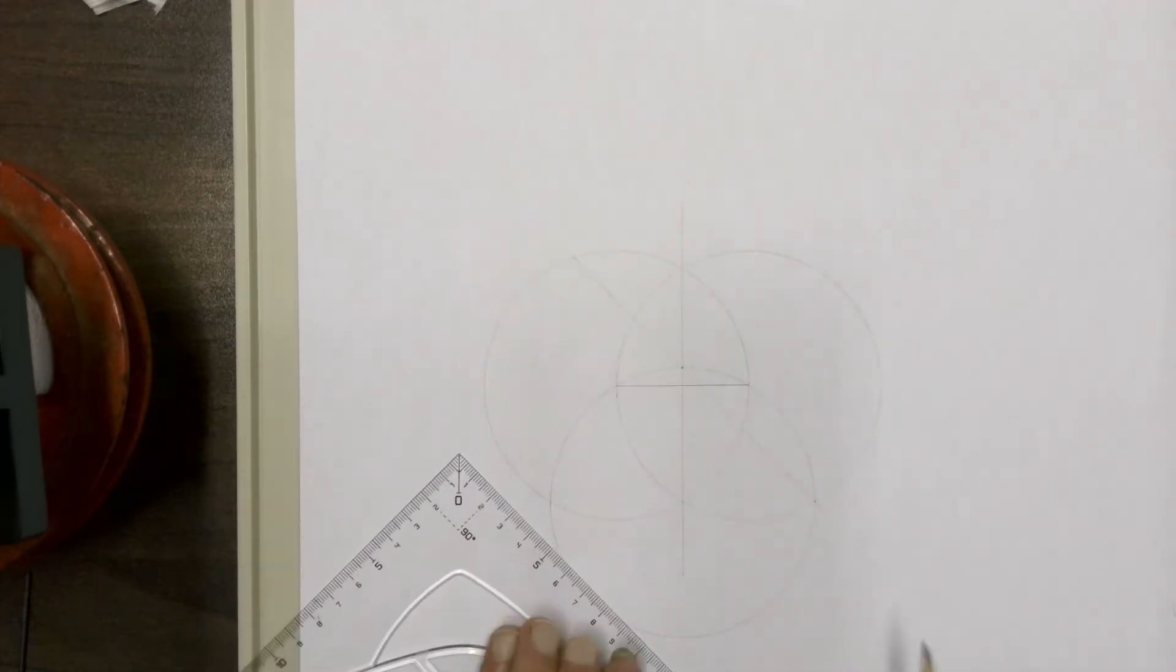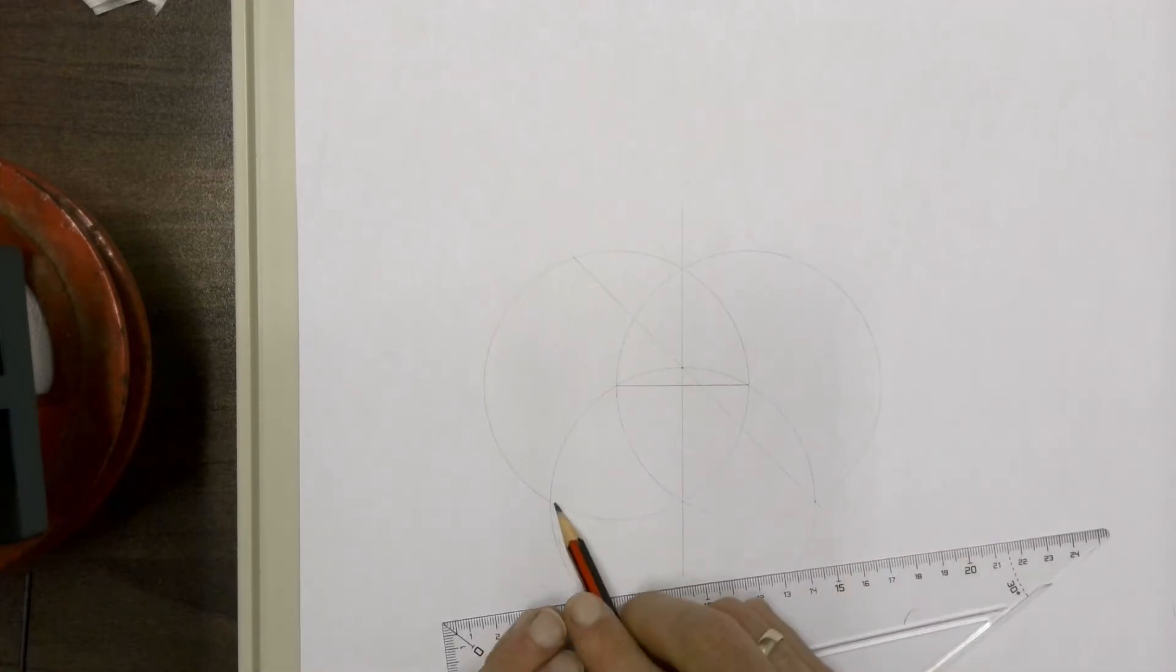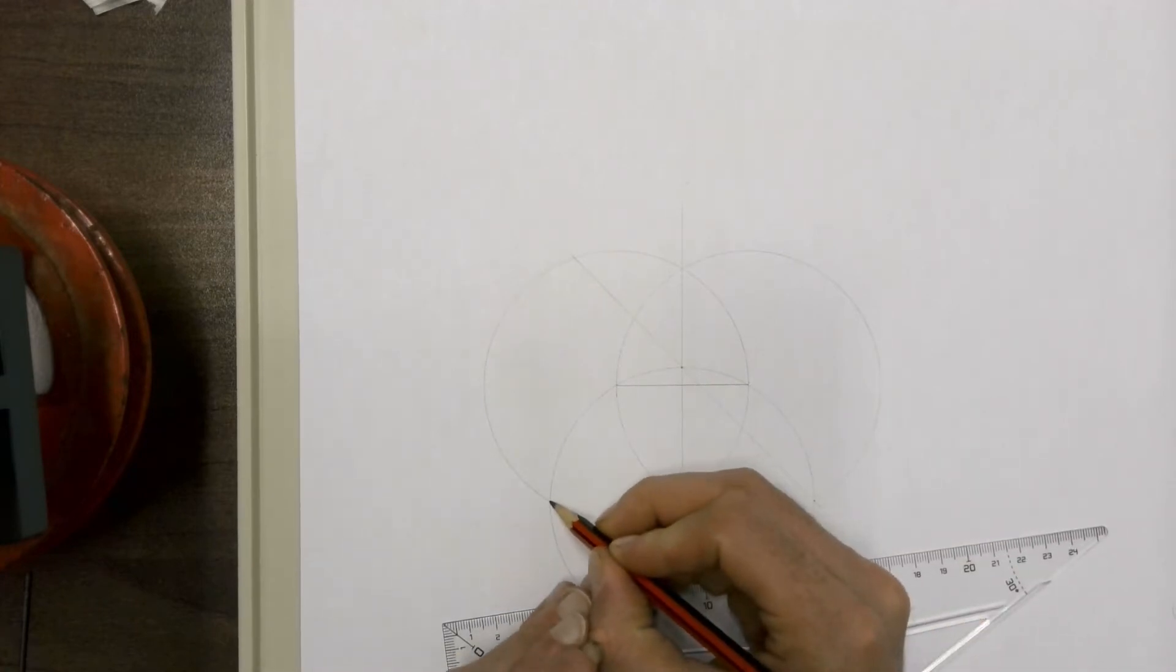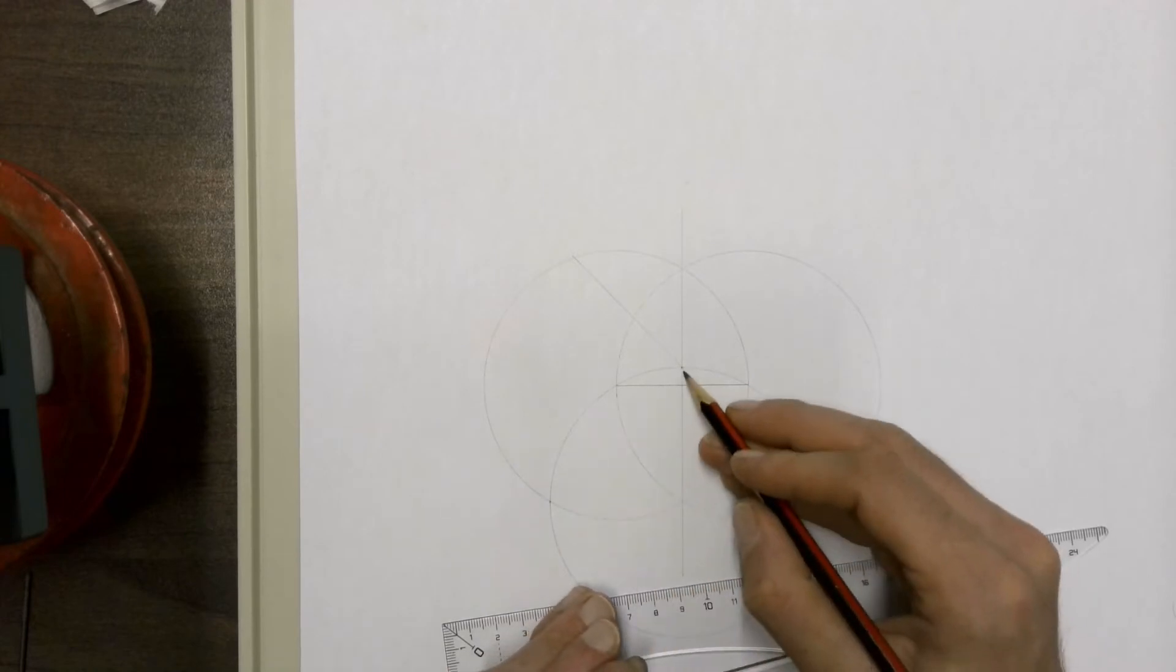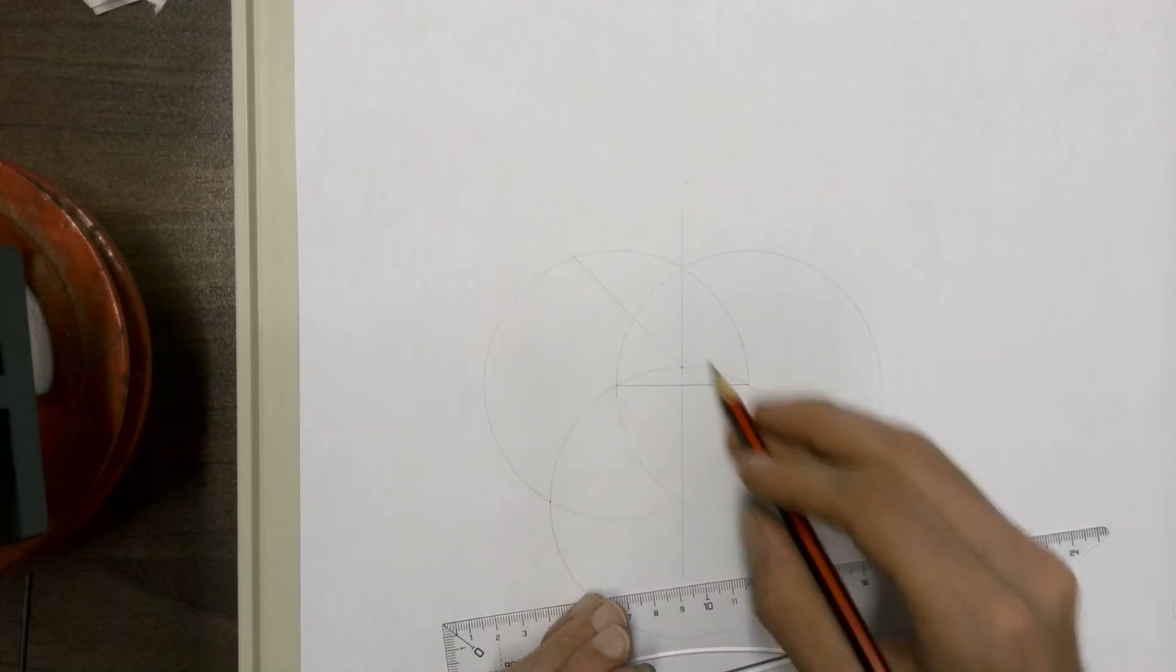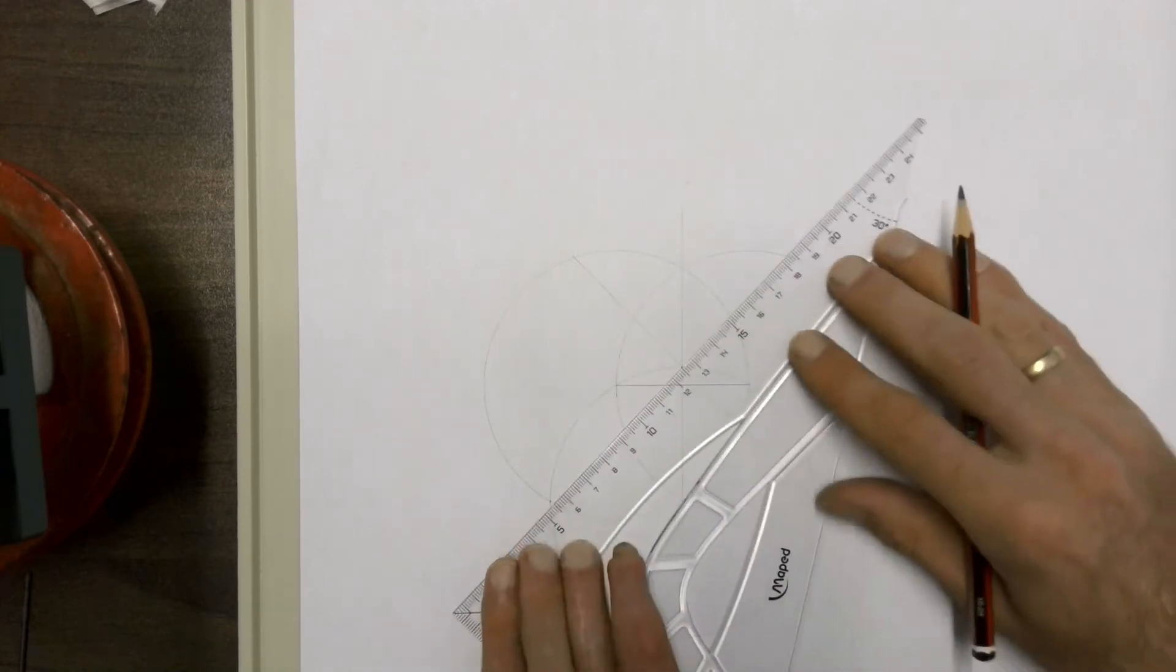Draw a line from the left-hand side, joining the point where those two circles intersect, through the same point where the circle and your bisecting line intersected.